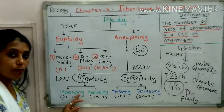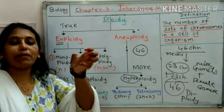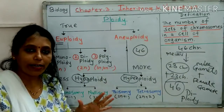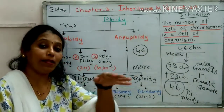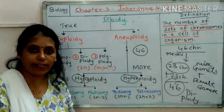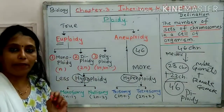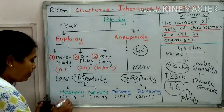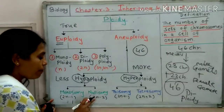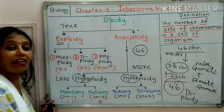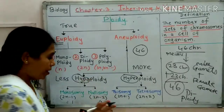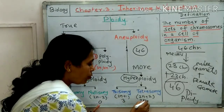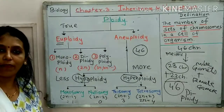How to remember: in monosomy, the normal condition is 2N. Mono means single — 2N minus 1, when you do the subtraction, it remains 1, so monosomy. When you do 2 minus 2, it remains 0, so nulli — nulli means nothing, hence nullisomy. Here 2N plus 1 becomes 3, so trisomy. Here 2N plus 2 becomes 4, so tetrasomy.